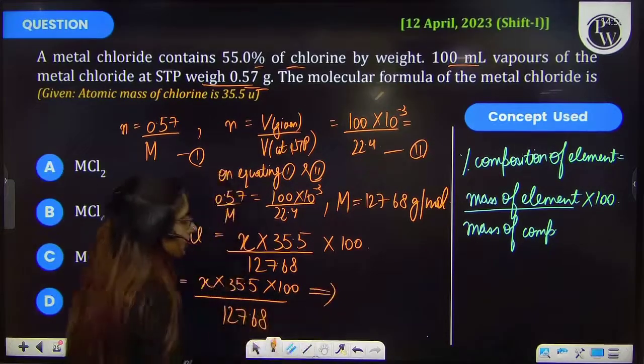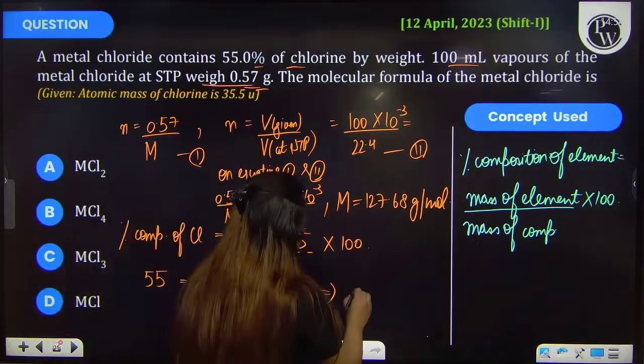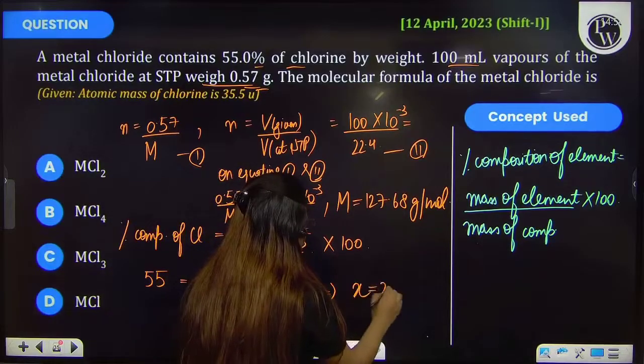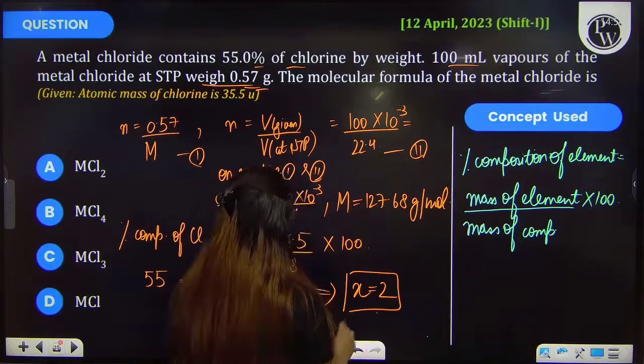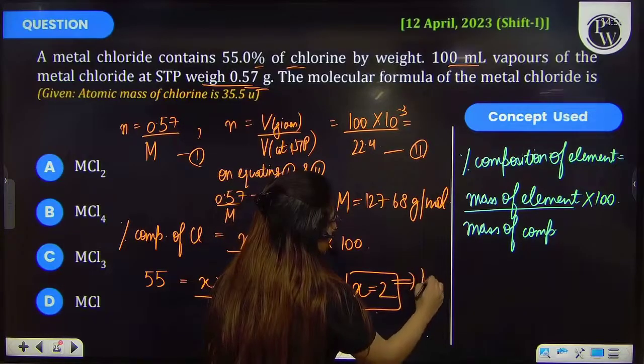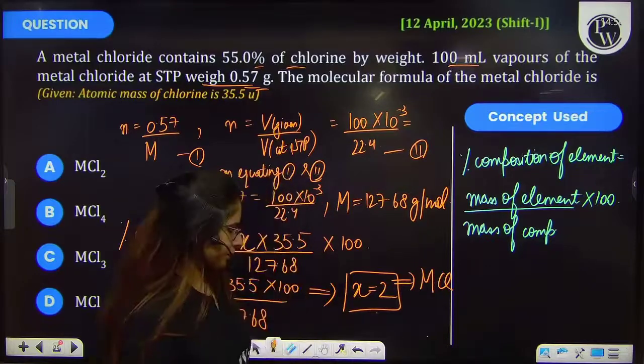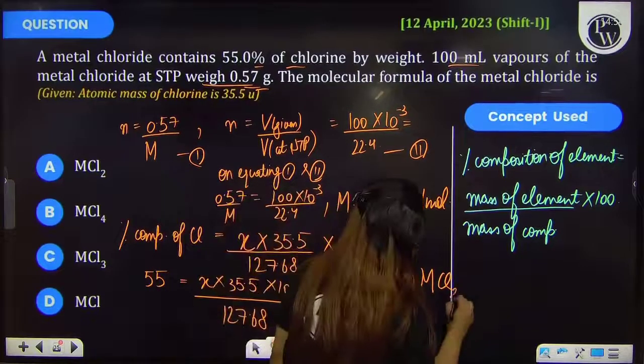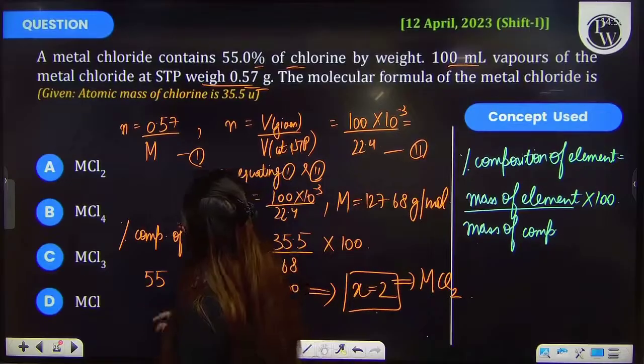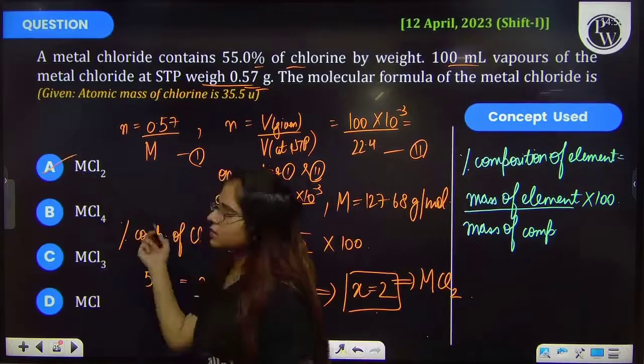So on calculating this you will get the value of x as 2. That means your compound is MCl2. Because the valence of chlorine is 1, that is a halogen. So MCl2. Therefore option A is your correct answer.